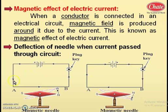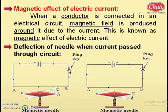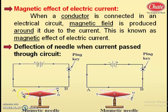This is a simple circuit. These are the connecting wires. This is a battery with a positive terminal and a negative terminal. This is a plug key, used to make and break the circuit. AB is a conductor. This is a magnetic needle having two ends — one is the north end and another is the south end.